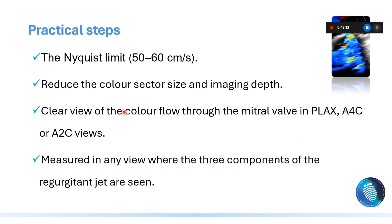How to assess vena contracta in practical steps: first, adjust the Nyquist limit, because the same principles that apply to the color jet apply to the vena contracta since it uses the same modality — color Doppler. So adjust the Nyquist limit, adjust the color box, and adjust the gain.